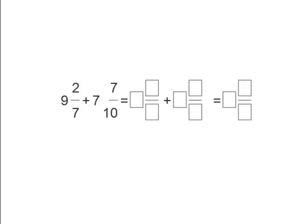We see here the problem 9 and 2/7 plus 7 and 7/10. We need to find a common denominator for the 7 and the 10, but we can first add the 9 and the 7. Let's write that in, and we already know that equals 16.